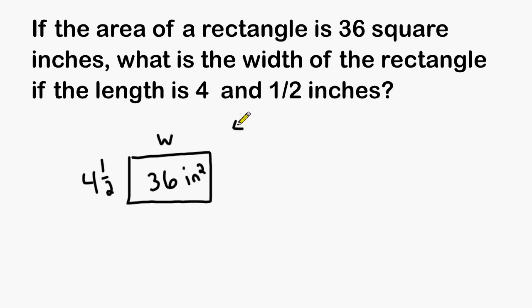So we do know that if we were to multiply 4 and 1/2 by our unknown width, it would equal 36 square inches. So what we are going to do is take the area and divide it by the given length of the rectangle.